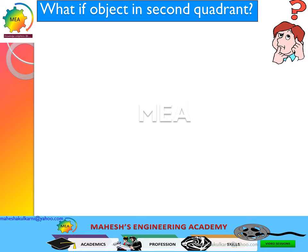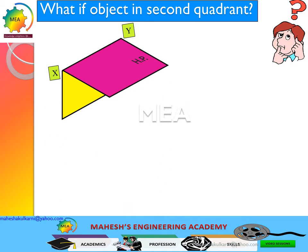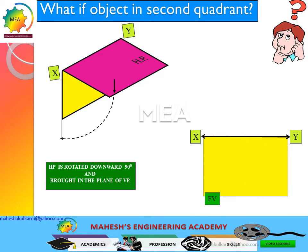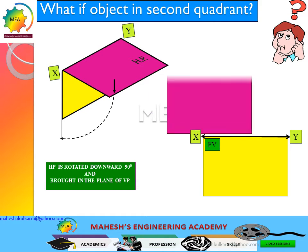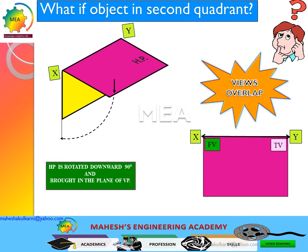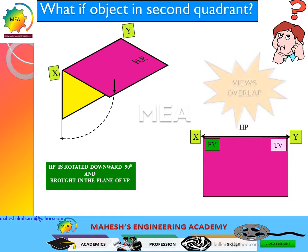What if the object is in the second quadrant? Consider the vertical plane and horizontal plane — the object is now placed in the second quadrant. The horizontal plane is rotated clockwise 90 degrees and brought into the plane of the vertical plane. The vertical plane will have the front view. However, when the horizontal plane is rotated, the planes overlap — meaning the front view and top view overlap when the object is placed in the second quadrant.